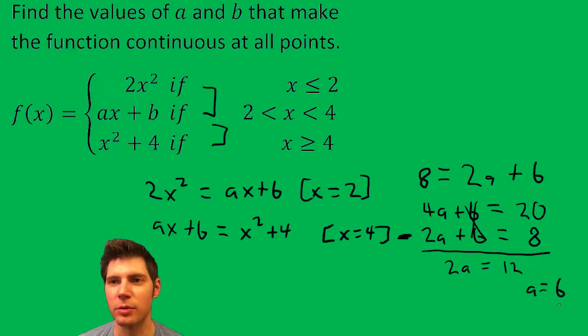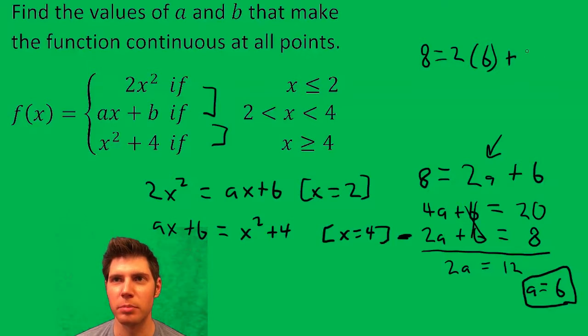So then if a equals six, we can plug it into, say, this equation up here. Eight equals two times six plus b. That's eight equals 12 plus b, minus 12, minus 12. And we get negative four equals b.